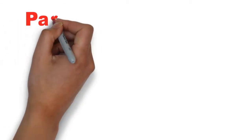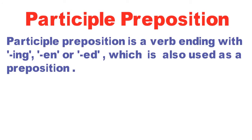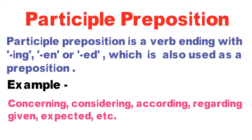Now we have the next preposition, that is participle preposition. Participle preposition is a verb ending with -ing, -en, and -ed, which is also used as a preposition. Yani, participle preposition -ing, -en, ya -ed ke saath samapt hone wali kriya hoti hai, jise hum preposition ki tarah bhi use karte hain. Examples: concerning, considering, according, regarding, given, expected, etc. Yahan par yeh sabhi words participle preposition ke examples hain. Halanki dikhne mein yeh sabhi verb ki tarah lagti hain, lekin inका use sentences mein as a participle preposition kiya jata hai.